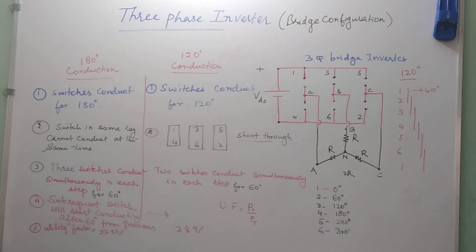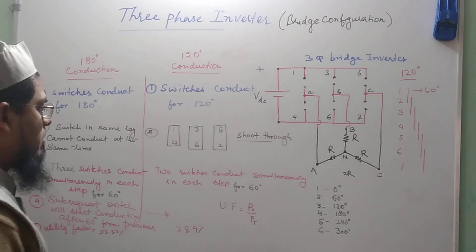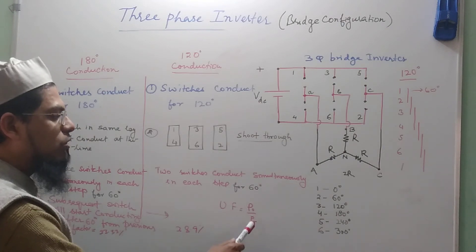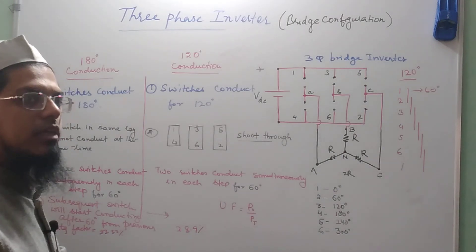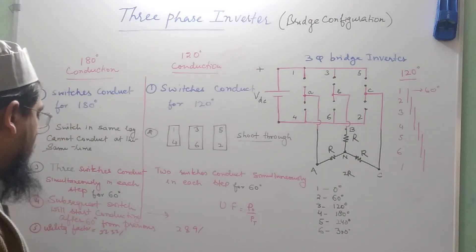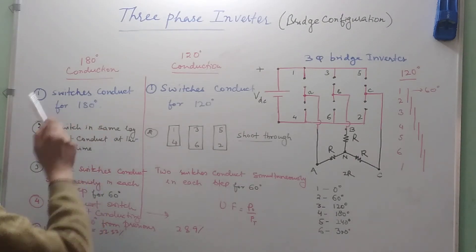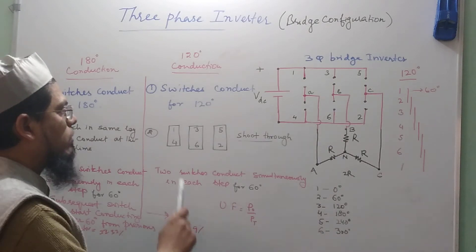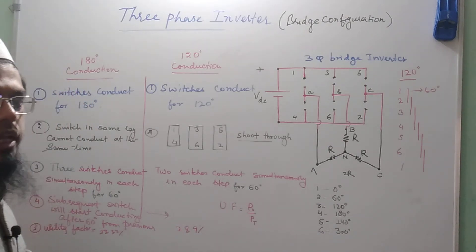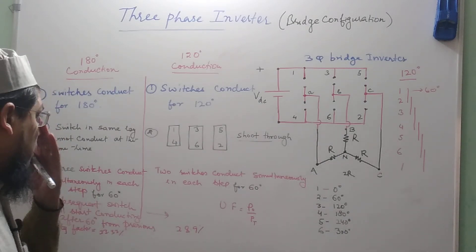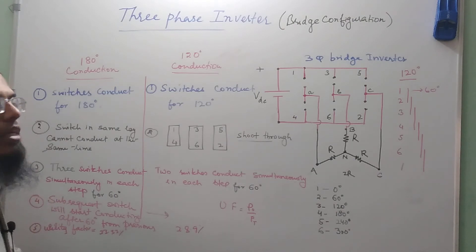One more point of comparison is the utility factor, which is defined as the ratio of the output power to the rated capability of all the devices in the inverter configuration. For 180-degree conduction mode the utility factor is 33.33 percent, while for 120-degree conduction mode it is 28.9 percent. This means the utilization of the switches is better in the case of 180-degree conduction mode.